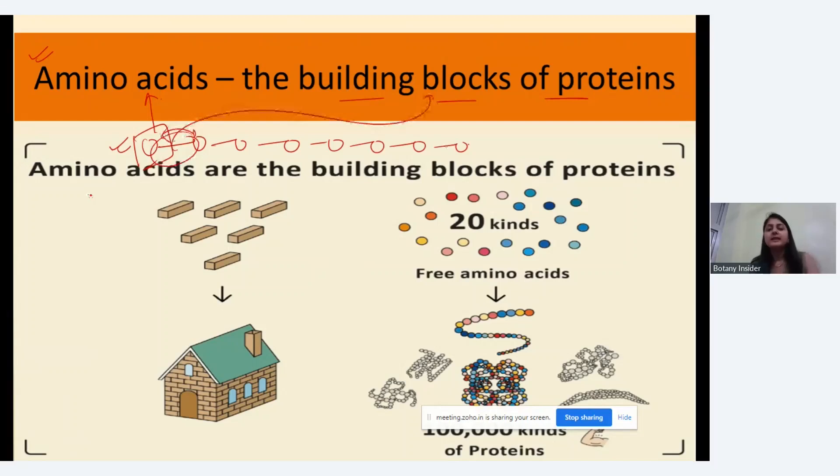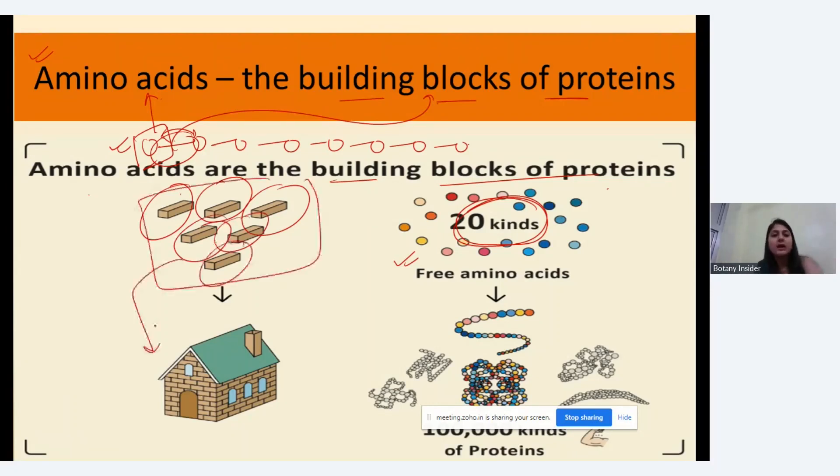Amino acids are the building blocks of protein. There are mainly 20 kinds of free amino acids. If it is an individual block, we call it an amino acid. But when all these blocks work together and join together, we give it a particular structure, and that structure is called a protein.